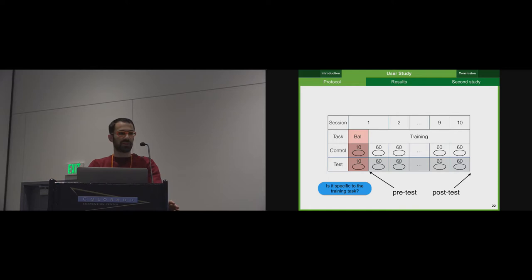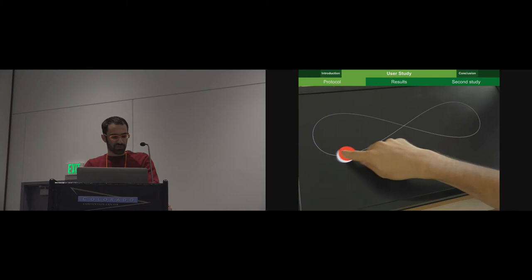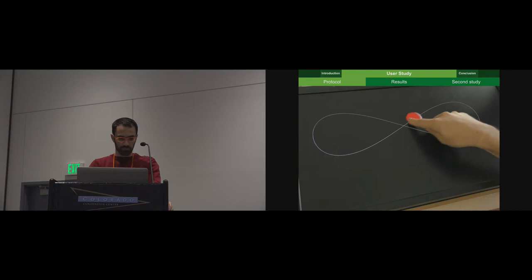Since the perception of latency strongly depends on the speed of the object, we wanted to know if learning to deal with latency on a given speed profile could be transferred to another speed profile. So for the transfer task, we decided to use another tracking shape with a different speed profile. So this is what it looks like, an infinity symbol.